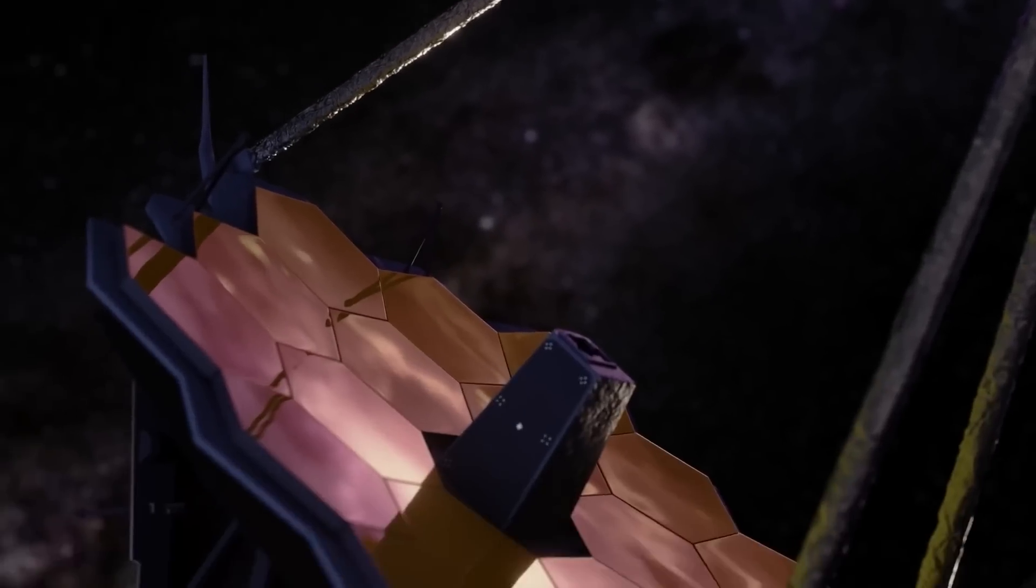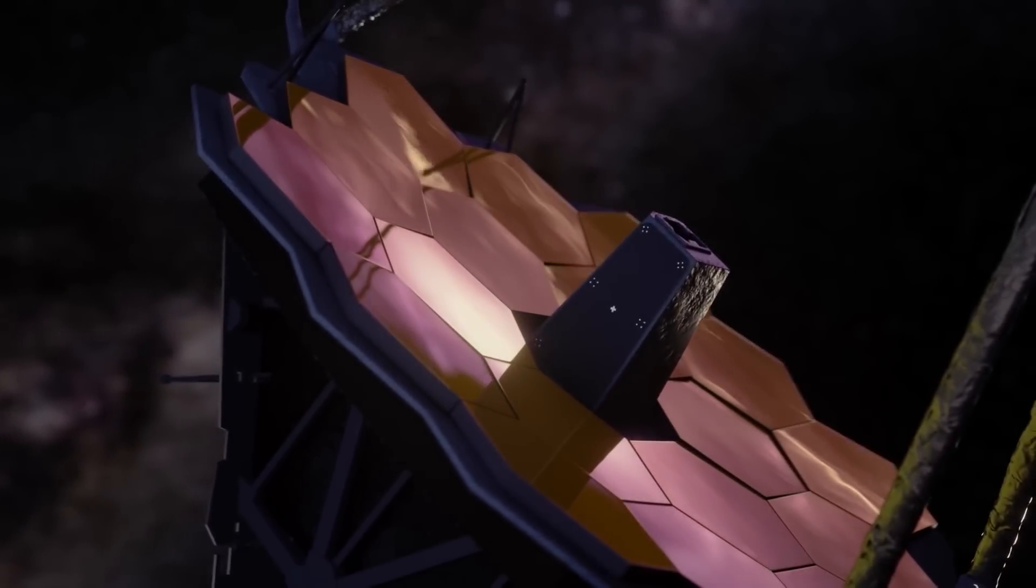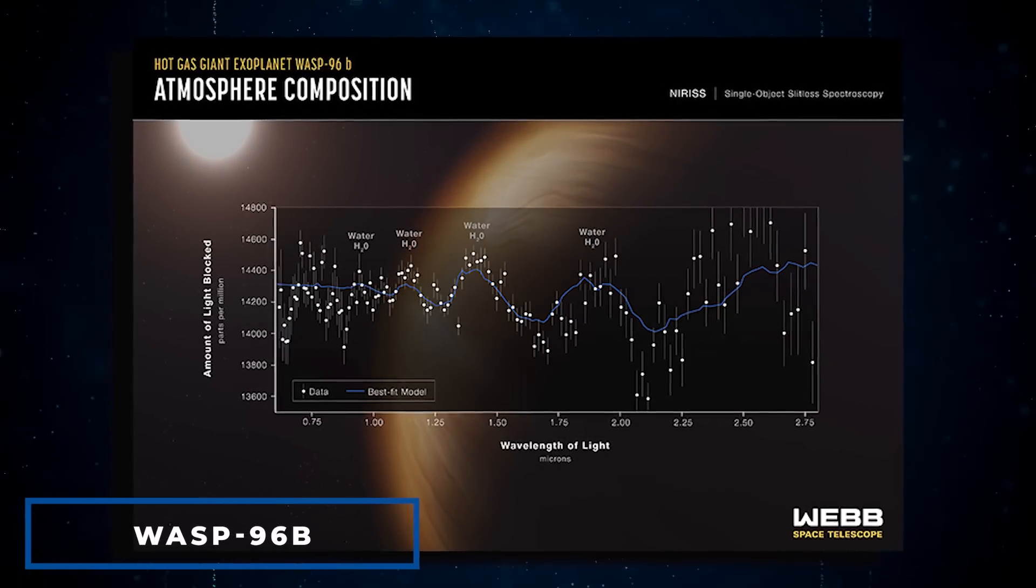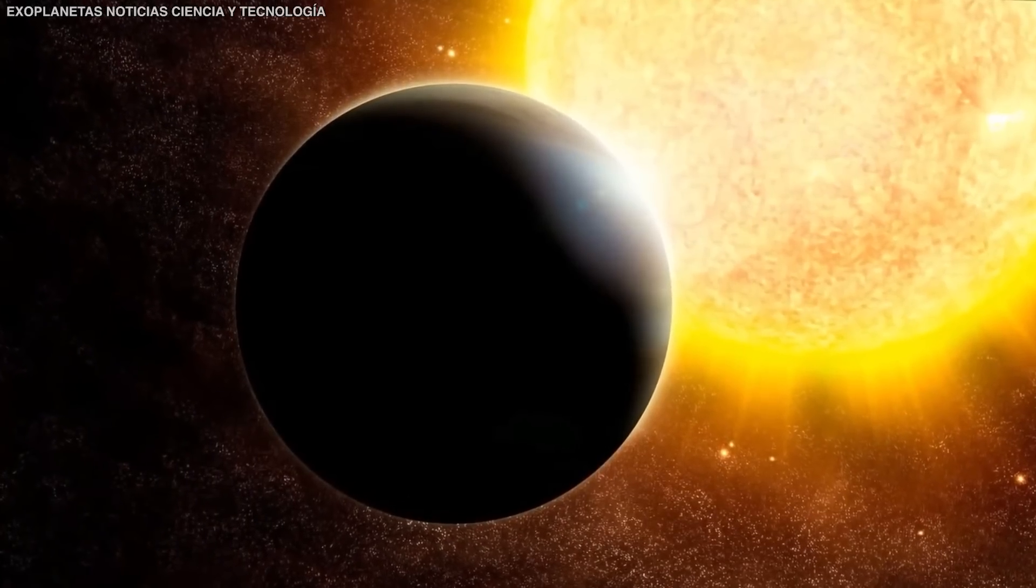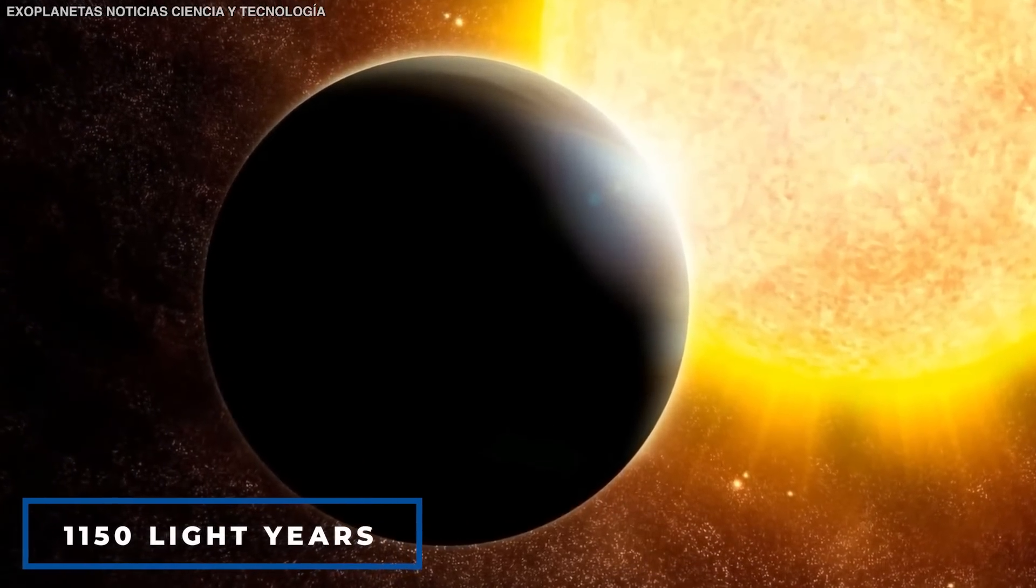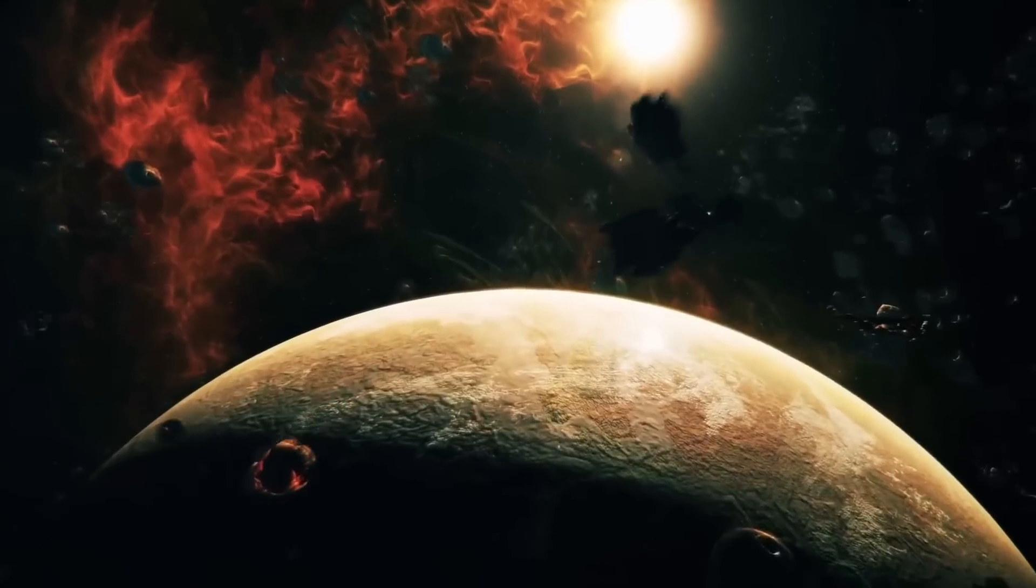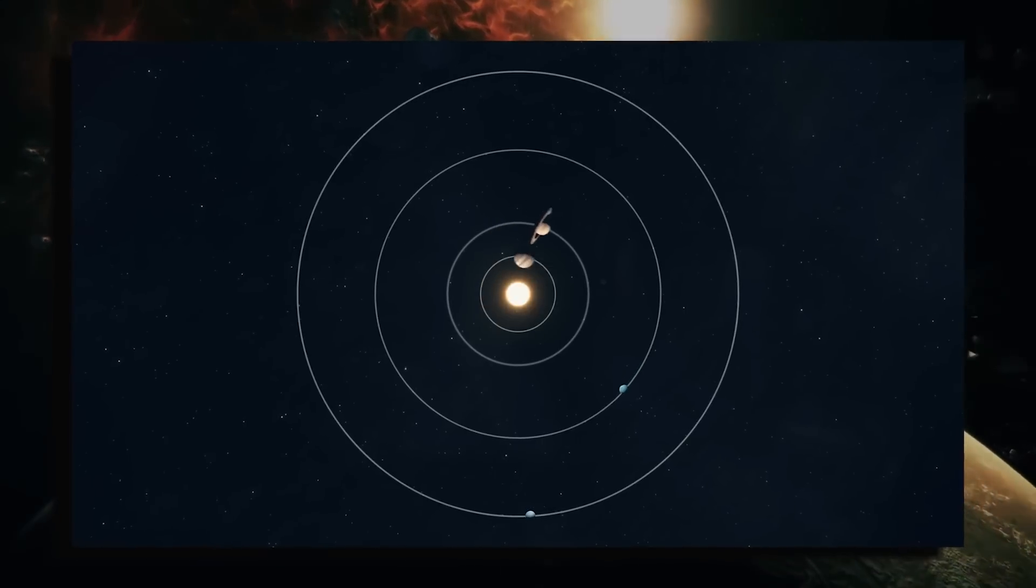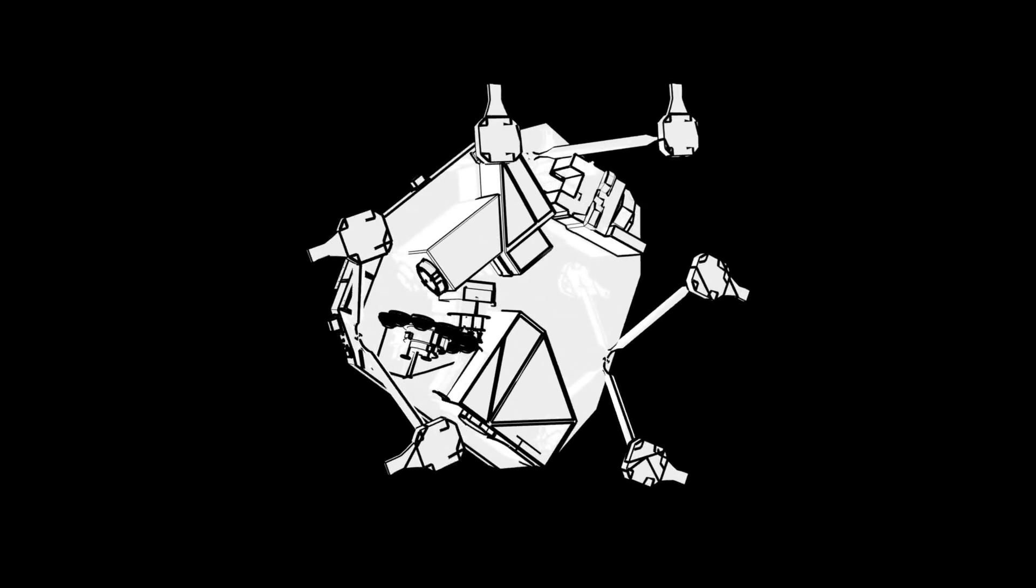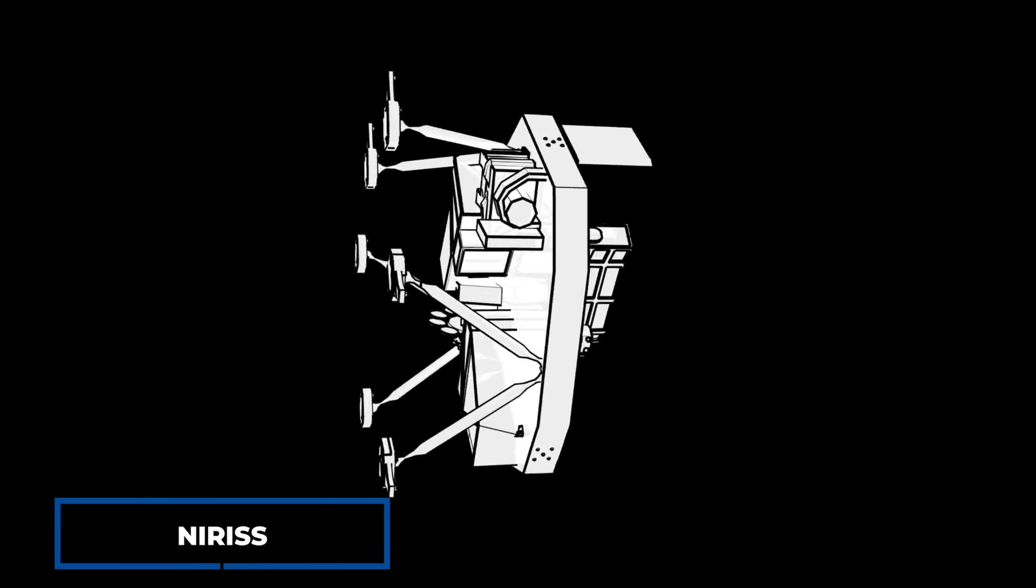The most exciting aspect of the JWST data isn't even a photo. It's spectrographic data from the planet WASP-96b. This is an exoplanet located approximately 1,150 light-years away from us. Exoplanets are planets that exist outside of our solar system. Aside from NIRCAM and MIRICAM, James Webb has a near-infrared imager and slitless spectrograph, or NIRIS, which assesses the intensity of different light wavelengths.